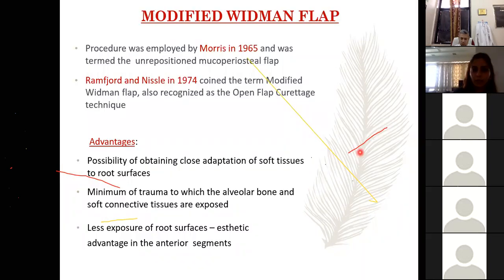Then came the modified Widman flap. Maury in 1965 termed it the unrepositioned mucoperiosteal flap, and Ramfjord and Nissle in 1974 coined and described in detail the modified Widman flap, also known as the open flap technique or open flap curettage technique.